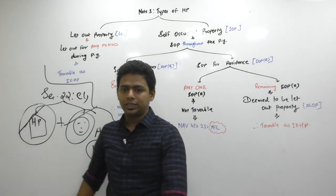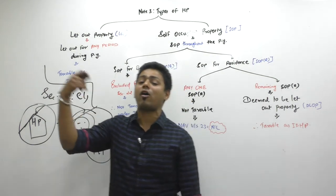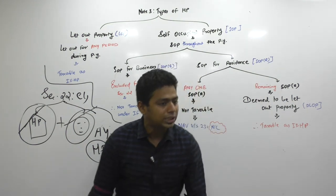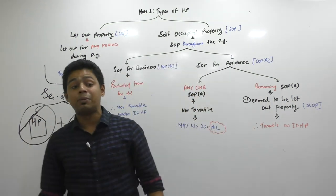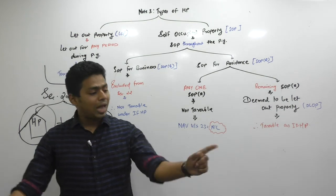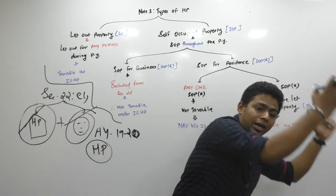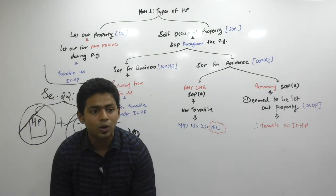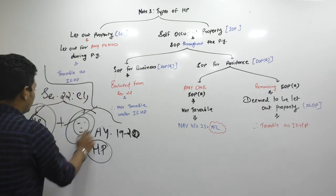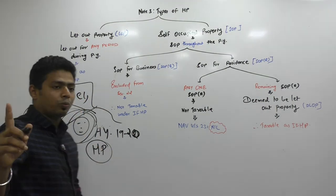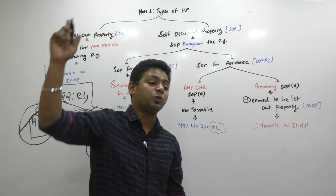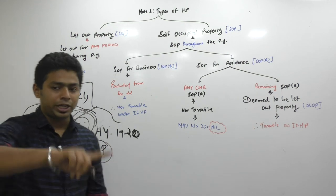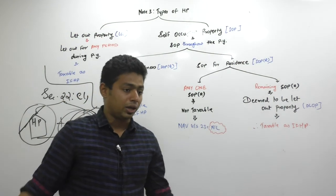Majority of times, to evade taxes, the assessee will try to show someone else on paper as the owner. The legal owner will be different and the real owner will be different. For example, the wife will become the legal owner and the husband will remain the real owner. In such cases, the department will take rent from the wife's income and it will be clubbed in the hands of the husband. Therefore, to have income from house property, you must be the real owner of the property. Those things are discussed under Sections 22 and 27.